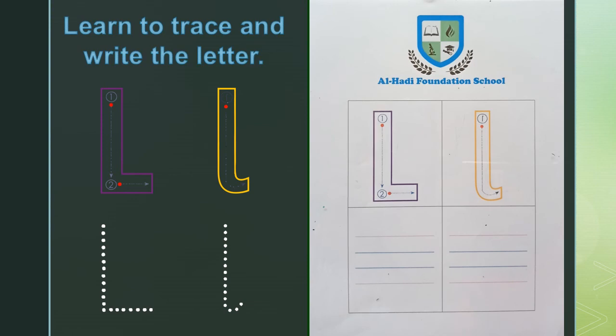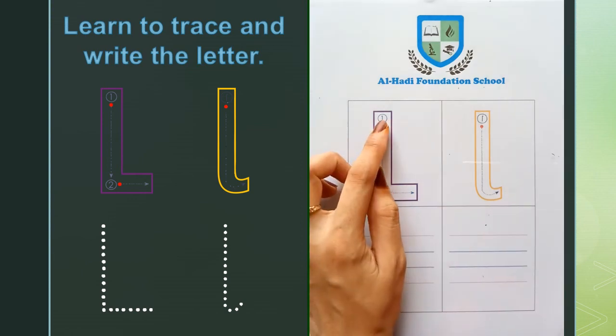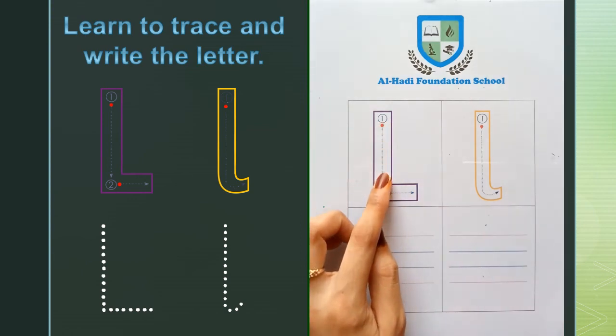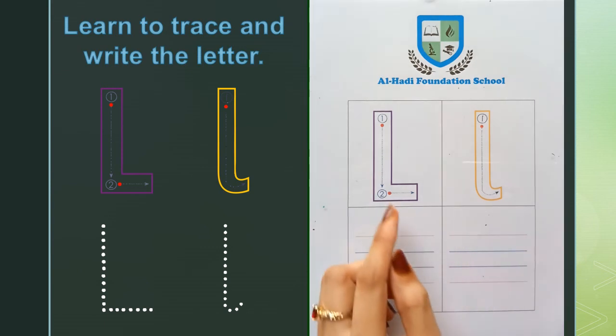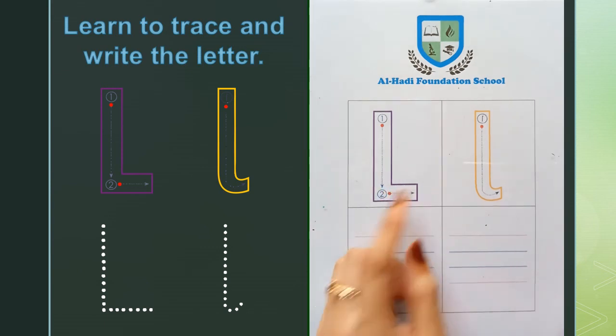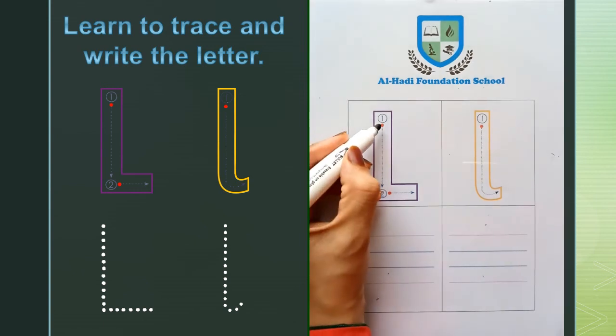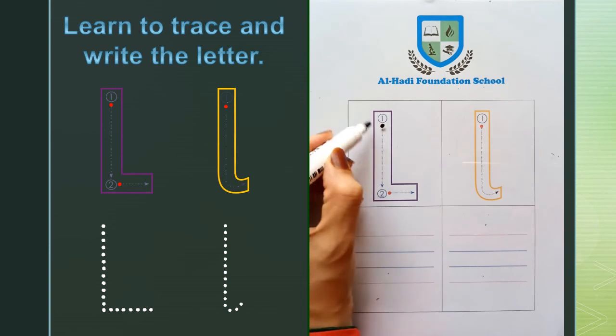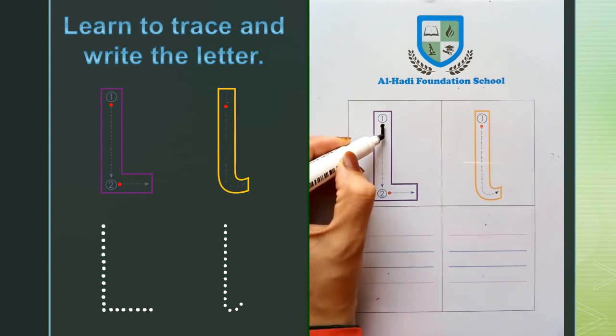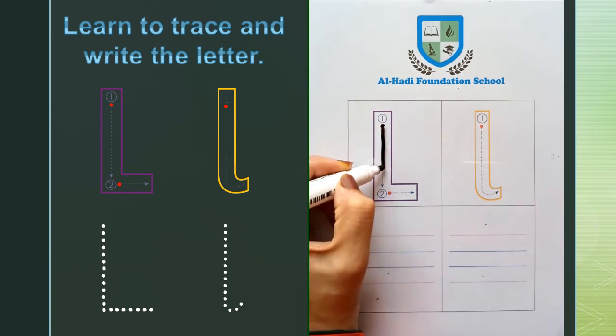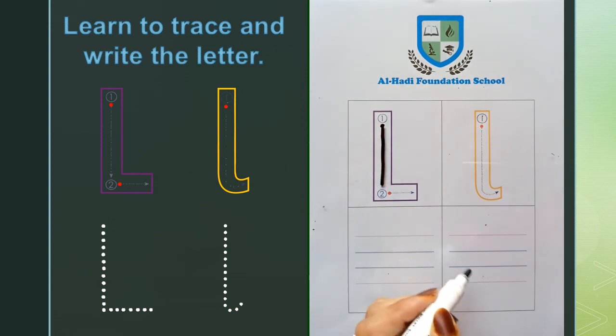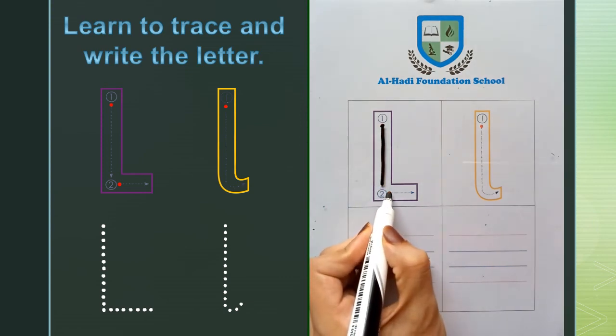First, trace with your finger the capital L. Keep your finger on the right dot. Make a downward straight line. Make a left to right straight line. Now, keep your pencil on the right dot. Make a downward straight line. Make a left to right straight line.